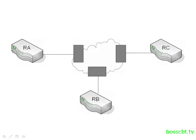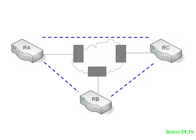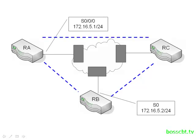Here's a diagram of our lab setup. Because this is a fully mesh topology, we have a virtual circuit between each of the router pairs. In a fully mesh topology, we can use one subnet to number all of the routers in this network. We're going to be focusing on router A and router B. The IP address uses a slash 24 subnet. Router A is going to use DLCI 29 and router B will use DLCI 59.